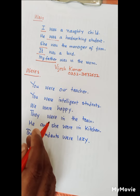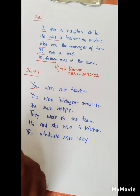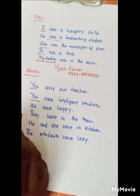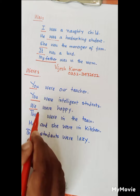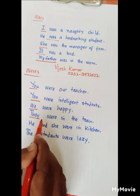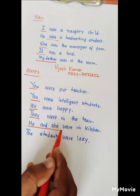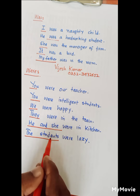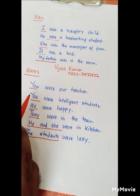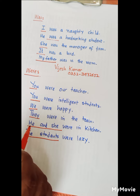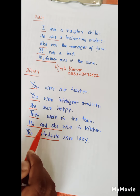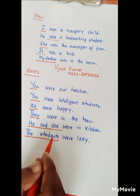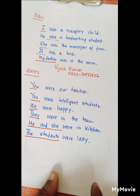'Were' is used with you — 'You were a teacher', 'You were intelligent students.' With we — 'We were happy.' With they — 'They were in the train.' With two nouns or pronouns connected by 'and' — 'He and she were in the kitchen.' And with plural nouns — 'Their students were lazy.' So 'were' is used with we, you, they, two pronouns or nouns connected by 'and', and plural nouns.